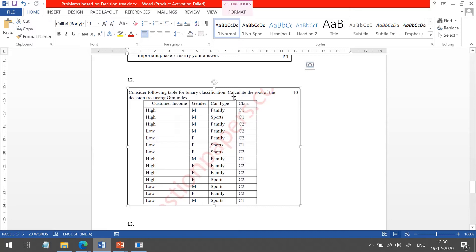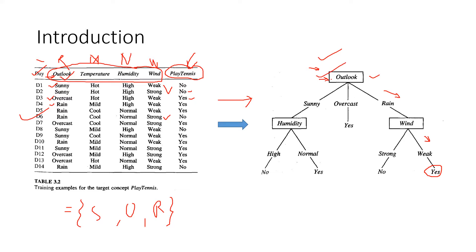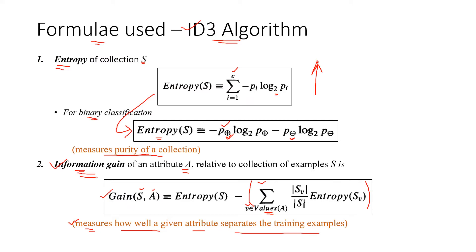One more problem: consider the following table for binary classification — calculate the root of the decision tree using the Gini index. So now they are asking to use Gini index instead of information gain. There are two popular Attribute Selection Measures, or ASM. The first is information gain, used in the ID3 algorithm, which we have seen. The second is the Gini index, which we will discuss in the next class.